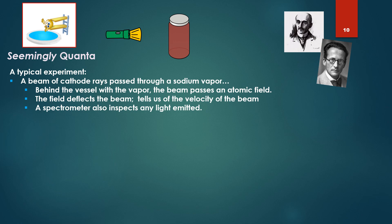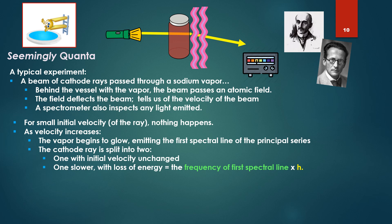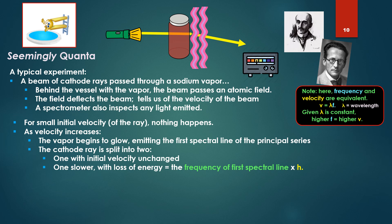In a typical experiment, a beam of cathode rays passed through a sodium vapor. Behind the vessel with the vapor, the beam passes an atomic field. The field deflects the beam and tells us the velocity of the beam, a new velocity, lower. The spectrometer also inspects any light emitted. For a small initial velocity of the ray, nothing happens, but as velocity of the beam increases, the vapor begins to glow, emitting the first spectral line of the principal series. Note, frequency and velocity are equivalent in this case.